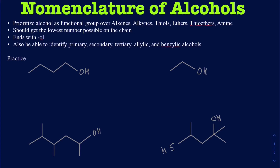Hello, everyone. In this video, I'm going to be talking about the nomenclature of alcohols. Alcohols have priority over many functional groups, including alkenes, alkynes, thiols, ethers, thioethers, and amines. I'm going to make sure I have examples of all of those so you can see how to use the rest of these functional groups as substituents where alcohol will be acting as the principal functional group. Since alcohol gets the priority, it must have the lowest number in the chain, and the name of the compound will end with -ol.